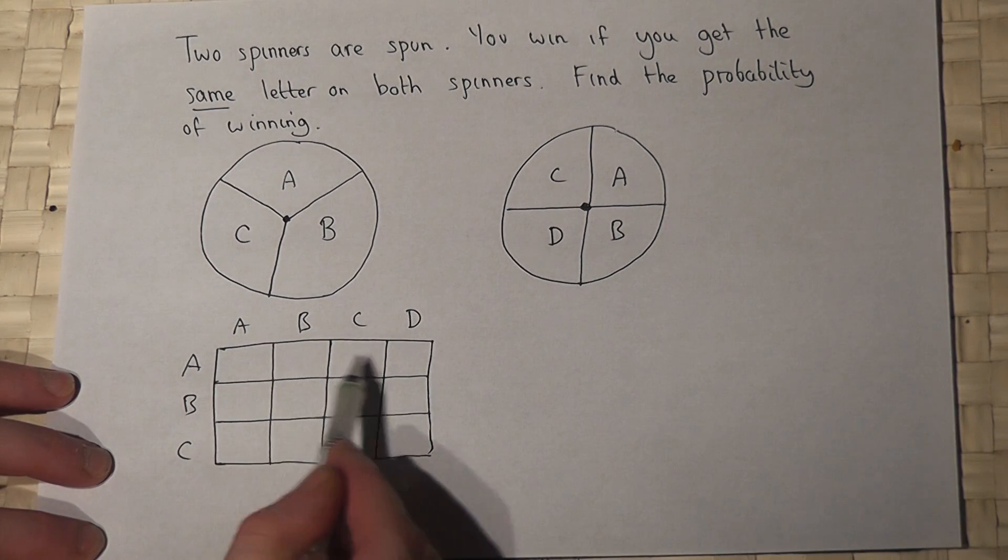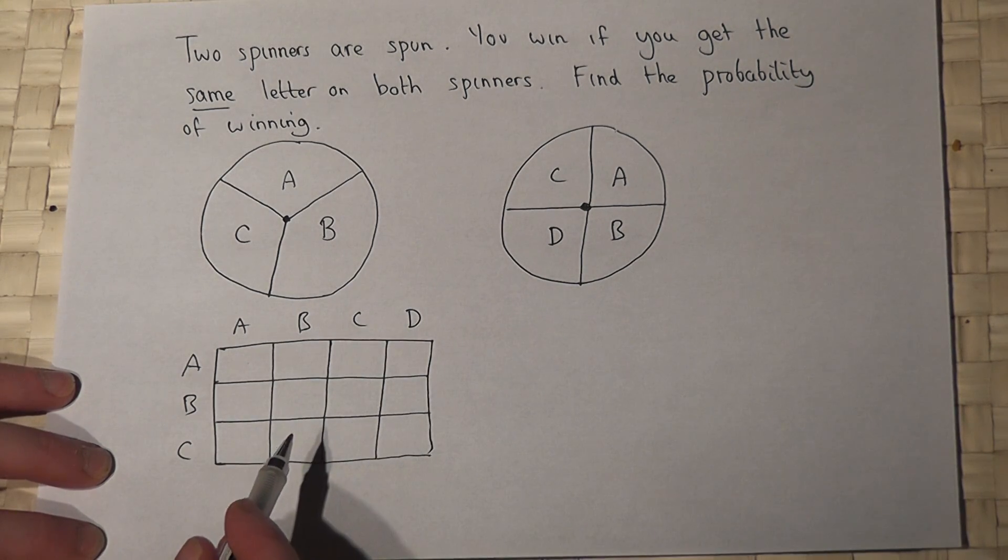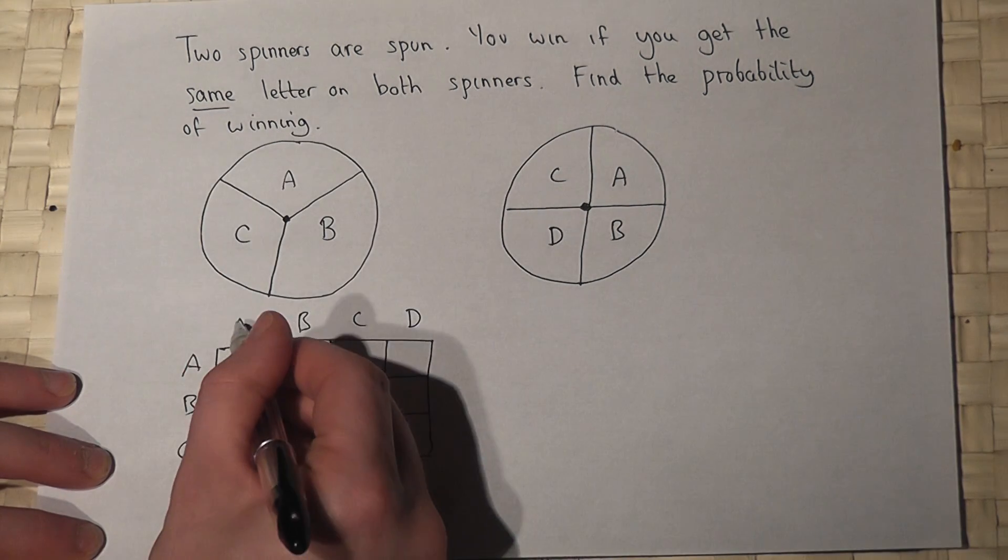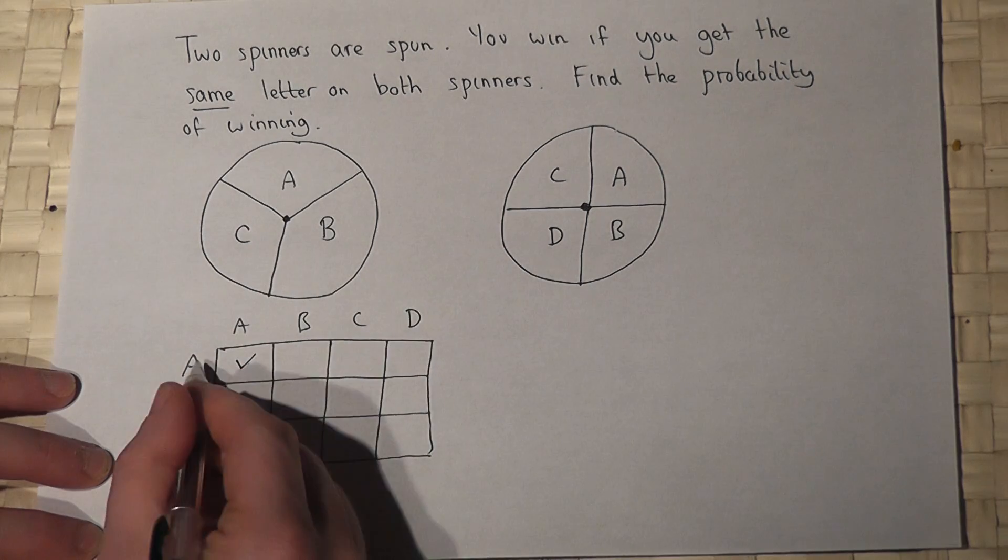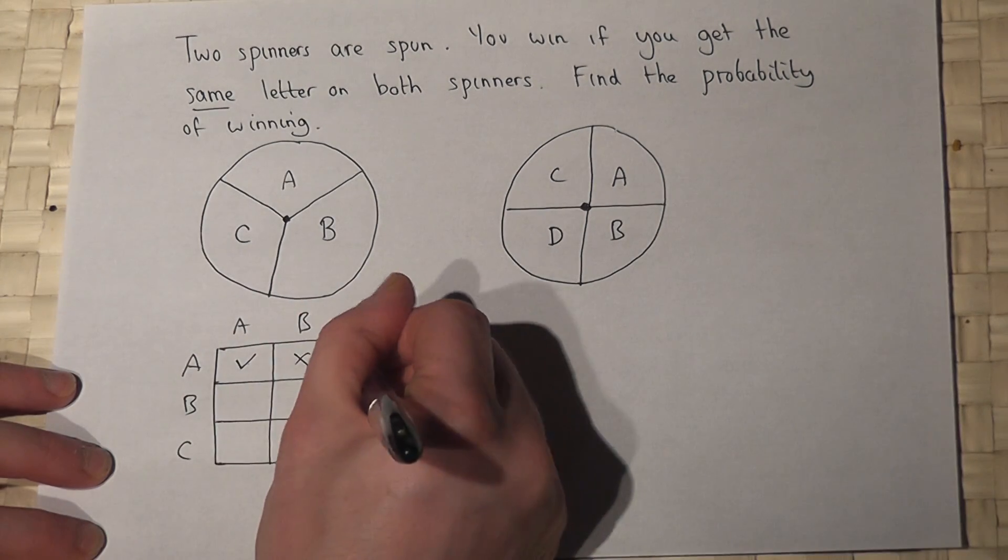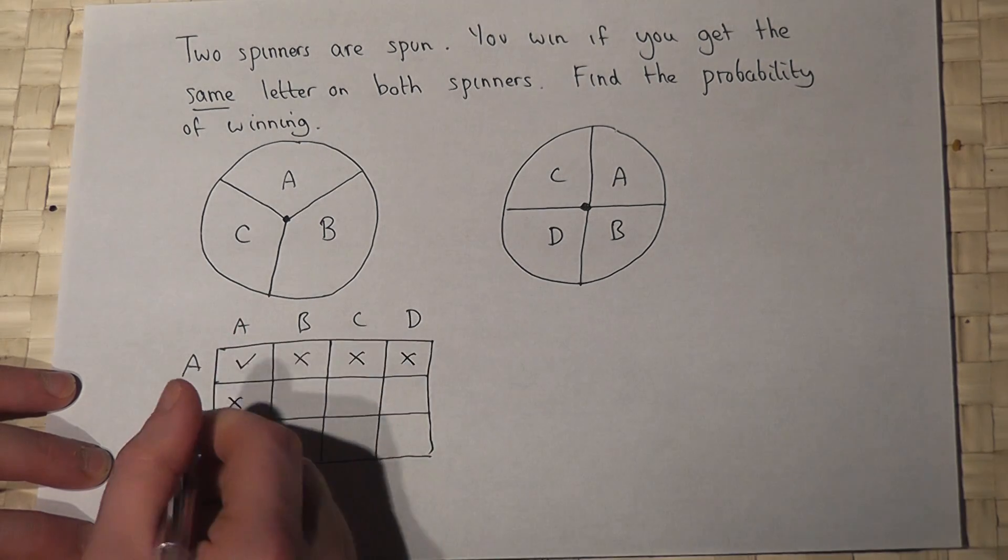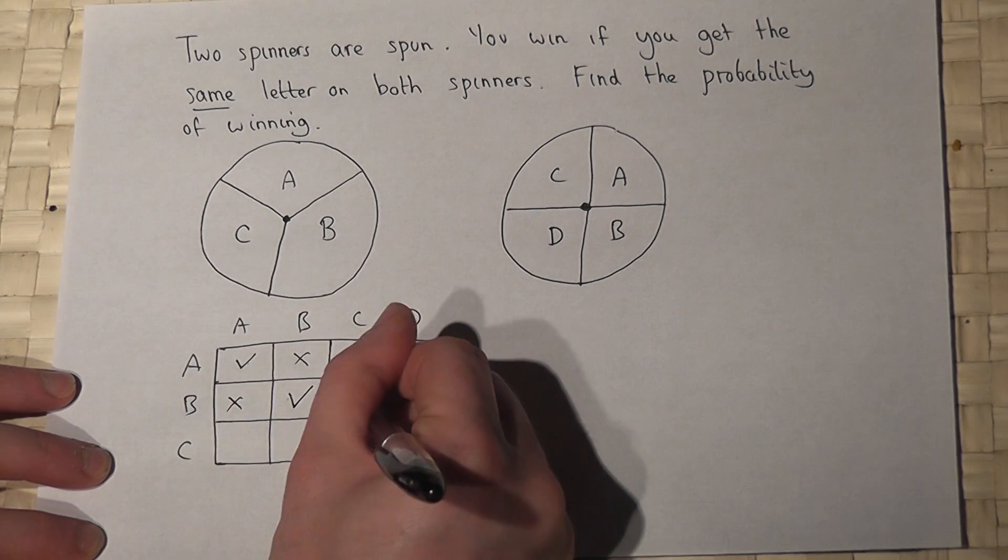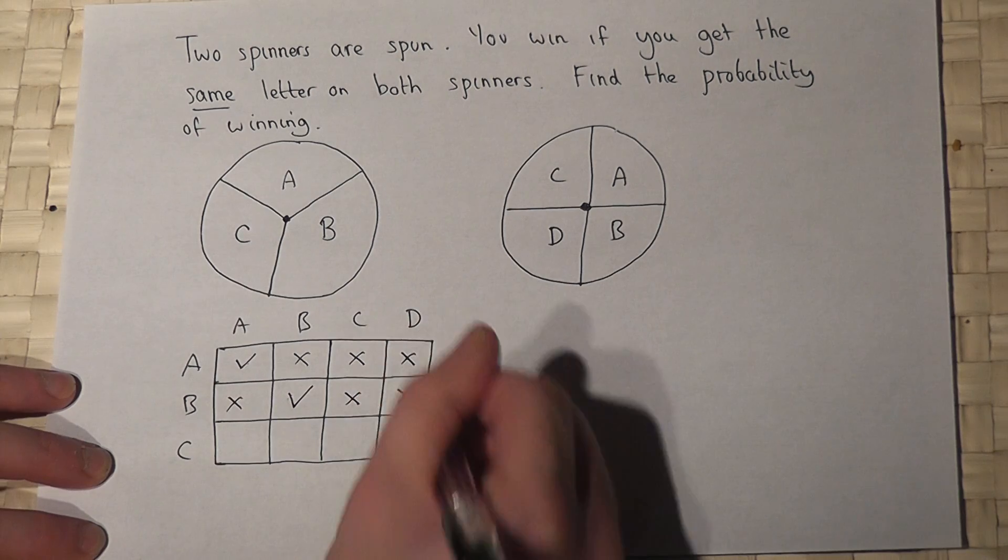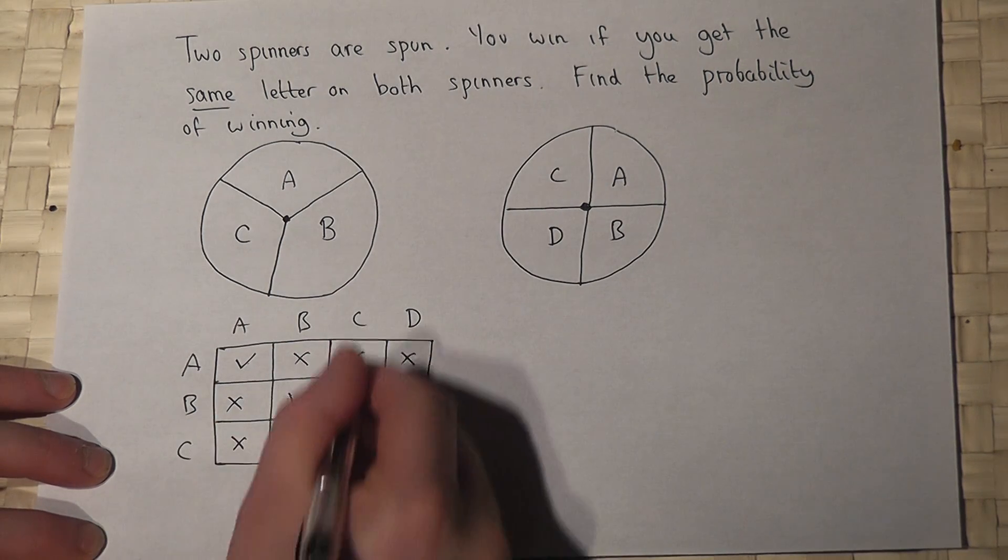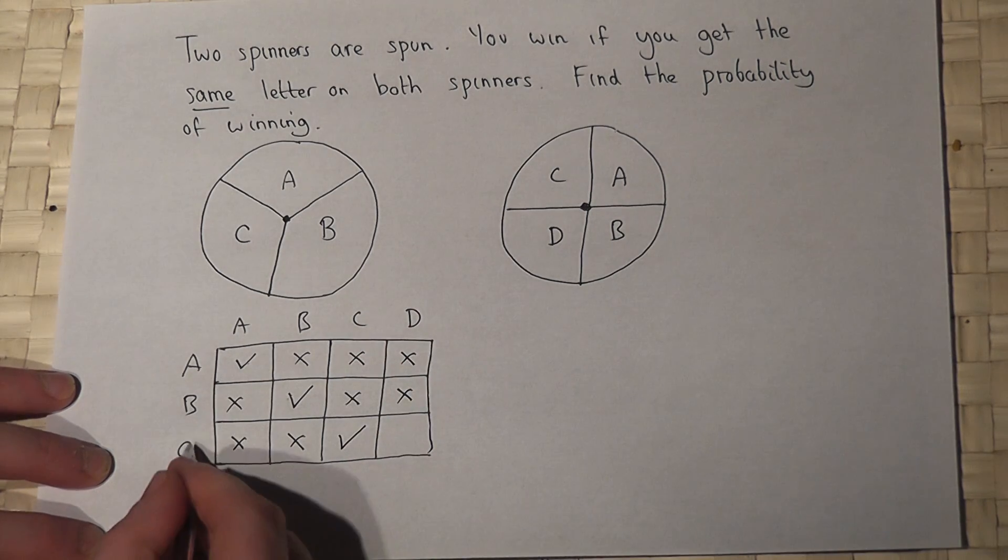Now then, these are all the options you can get. And you win if you get the same letter on both spinners. So an A and an A is a win. An A and a B is not a win. Not a win. Not a win. A and B, no. B and B, yes. That's a loss. That's a loss. A and C, no. C and B, no. C and C, yes, I win that one. C and D, no, I don't.